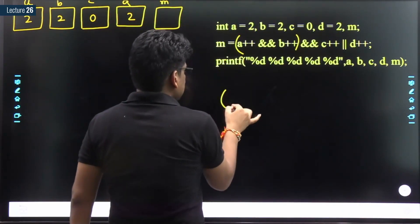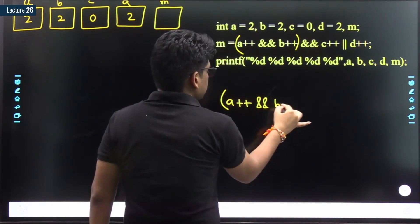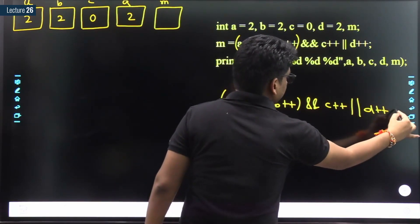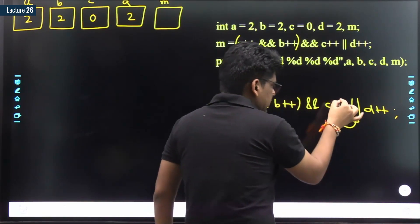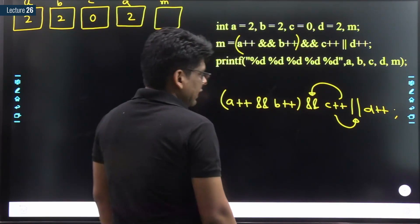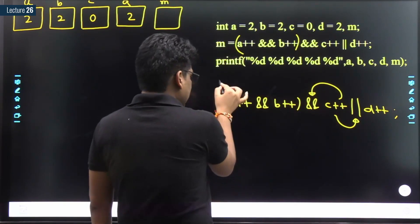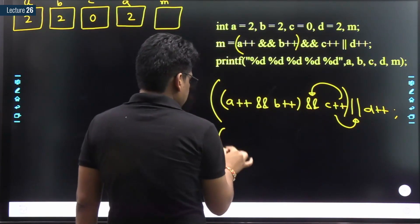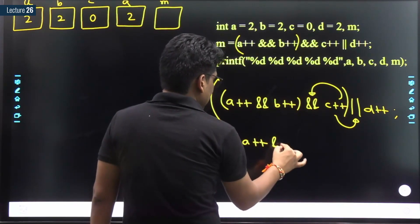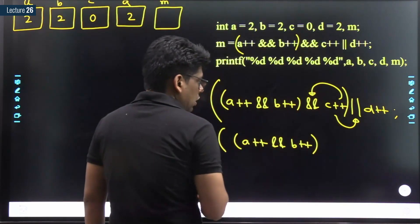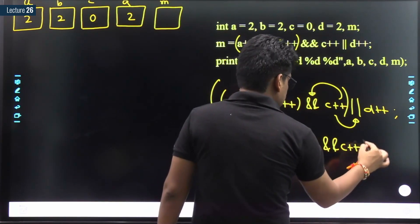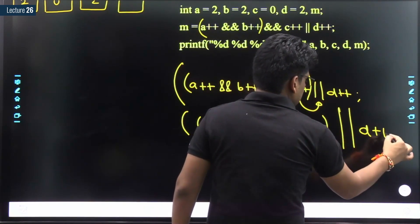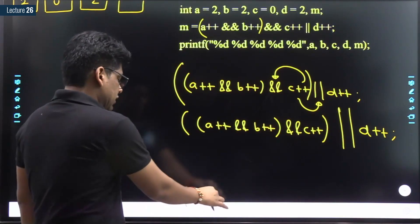For example, in 'a++ AND b++ AND c++ OR d++', since AND has higher priority, c++ is associated with AND, not OR. So the expression is parenthesized as: ((a++ AND b++) AND c++) OR d++. This is the entire expression we need to work upon.